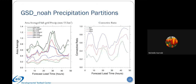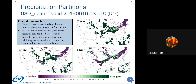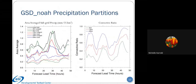Looking at the precip partitions for GSD NOAA: we see a general transition from subgrid to more resolved as you go from 25 to 13 to 3 km, with similar results to the GFS—areas of active convection and higher precipitation accumulations tend to be resolved by the microphysics scheme, and vice versa for the cumulus scheme. The 3-kilometer run gets the total precipitation very well, whereas 25 and 13 tend to underdo the precipitation. For convective ratios, there is a fairly uniform step down as you go from 25 to 13 to 3, differing slightly from the GFS physics results.